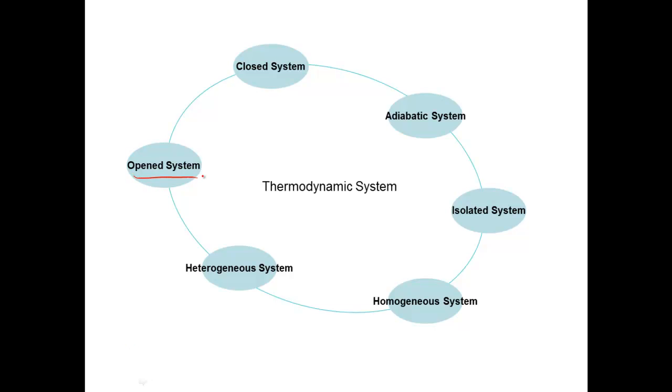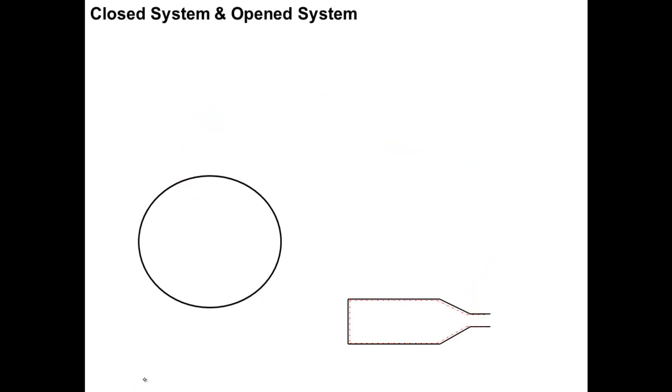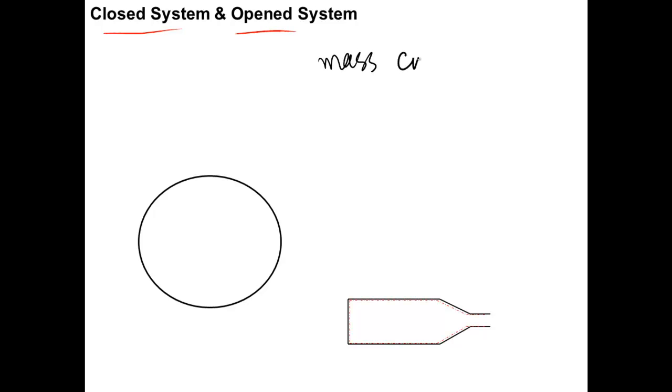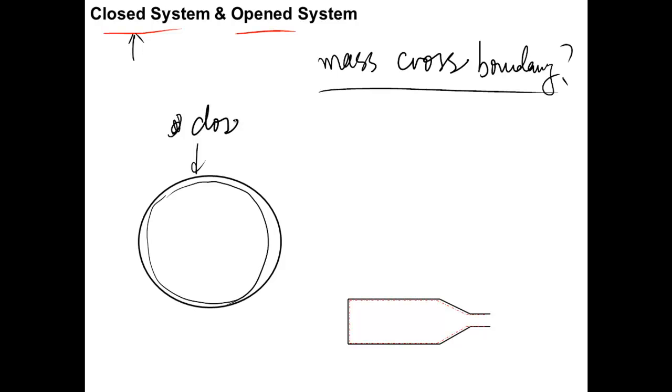First is open system and closed system. Whether a system is open or closed depends only on whether mass can cross its boundary. If there is no mass flow into or out of our system, it is called closed system. For example, I have a ball here and draw the boundary which encloses the whole inside this ball. This system is called the closed system because there is no mass change.